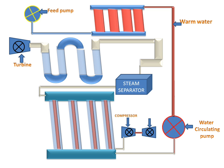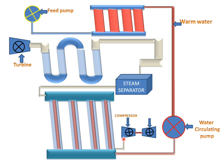The water circulating pump will deliver the warm water to the radiating tube section for converting it into saturated steam. This compressor is attached to the turbine. The turbine is rotating with the help of flue gases and the turbine will rotate the compressor. The compressor will send the compressed or hot air to the radiating section, which increases the efficiency of the combustion chamber.